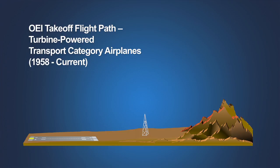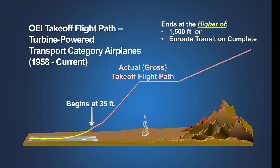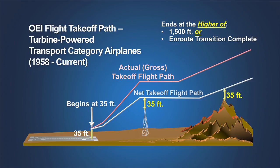Beginning in 1958, the certification rules defined a separate takeoff flight path that begins at 35 feet above the runway surface at the end of the takeoff distance. It is a one-engine inoperative path that continues through each of the takeoff segments and ends when the airplane is at a height of 1,500 feet above the runway, or at the point at which the transition to the en route configuration is complete, whichever is higher. This actual or gross takeoff flight path represents the one-engine inoperative performance the airplane has been demonstrated to be capable of achieving. These revised certification rules also defined a new net takeoff flight path, determined by decreasing the airplane's demonstrated one-engine inoperative performance by a conservative margin.